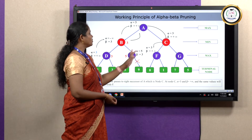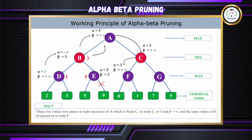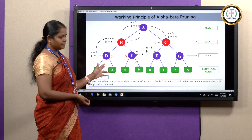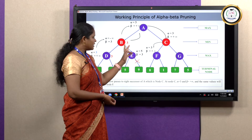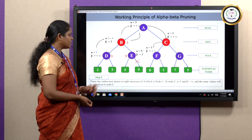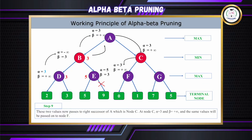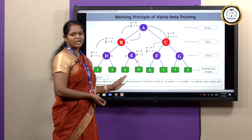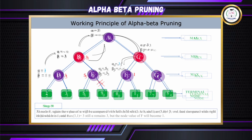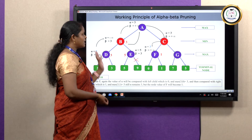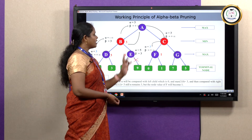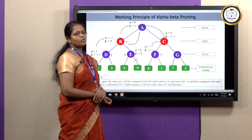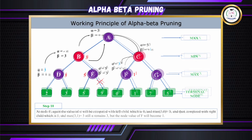At node F, we follow the same steps. Node F has a left child value 0. We compare alpha value 3 and 0 — 3 is greater, so alpha is not updated. Then we check the right child of node F, value 1. Comparing 3 and 1, alpha already holds the maximum value, so alpha remains 3. The node value for F is updated as the max of 0 and 1, which is 1.